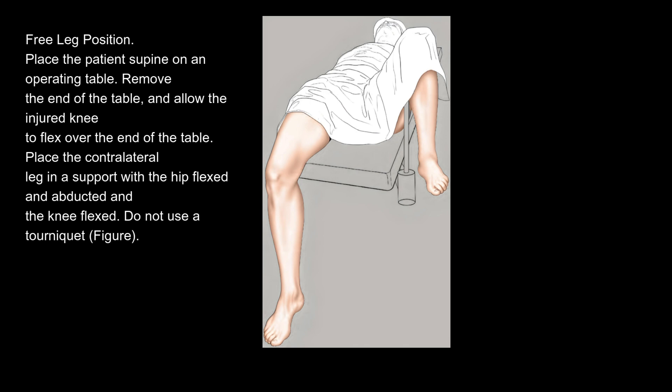Free leg position: place the patient supine on an operating table. Remove the end of the table and allow the injured knee to flex over the end of the table. Place the contralateral leg in a support with the hip flexed and abducted and the knee flexed. Do not use a tourniquet.